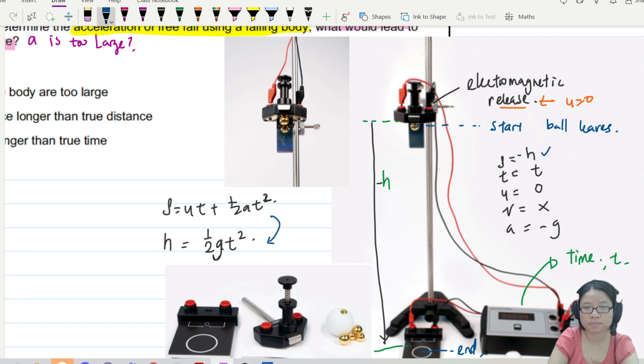S is H. T is maintained as T. U is zero. So this one becomes zero. And then A is negative G. Negative, negative, both sides will cancel out. Pretty good.